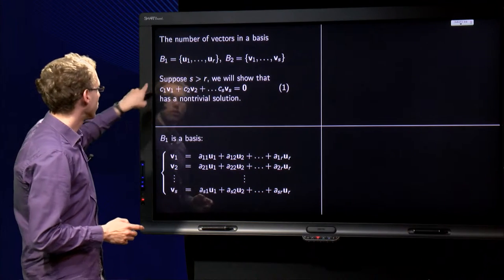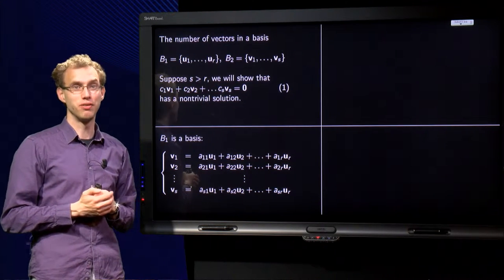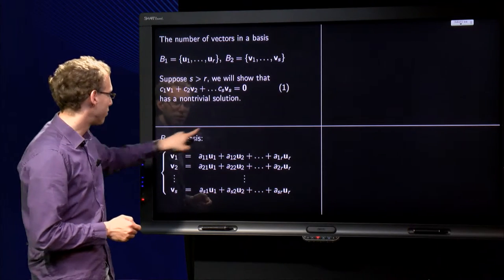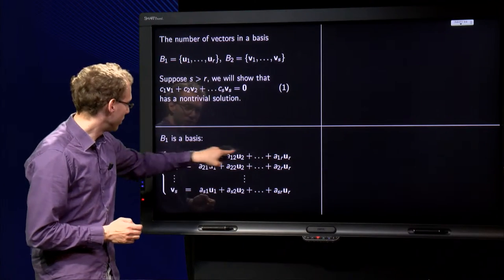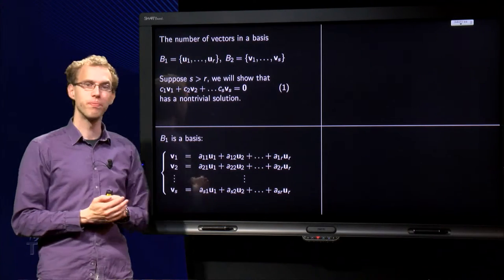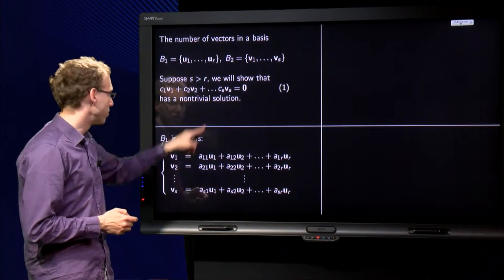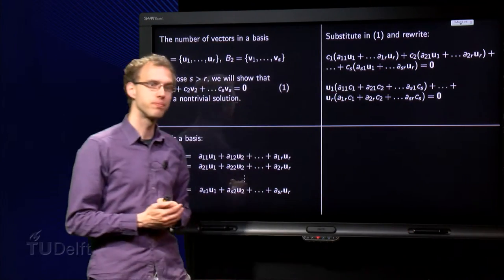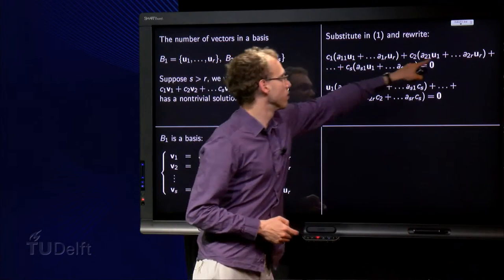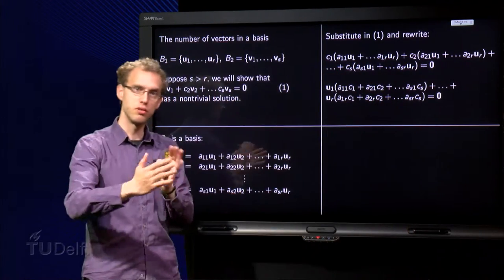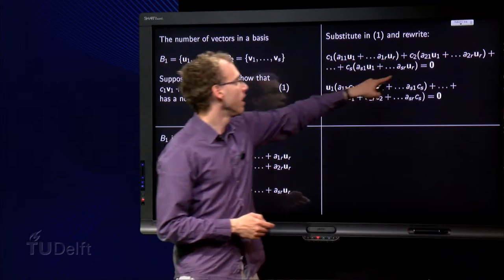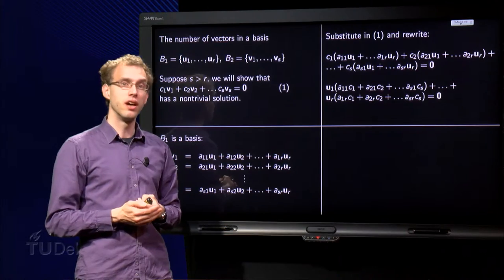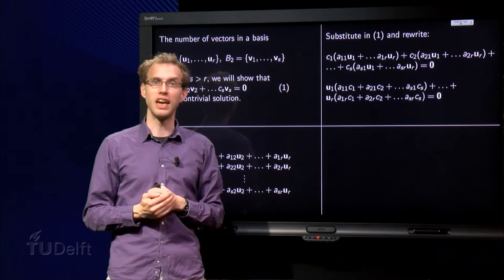And then we want to show that this equation over here has a non-trivial solution. So what are we going to do? We substitute this v₁ over here, this v₂ we substitute over here, up to the vₛ which we substitute over there. So we get a huge expression, with dots over here, dots over there because lots is missing, equals zero.